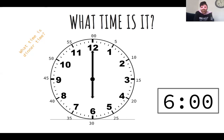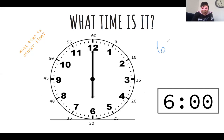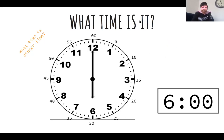Six and then dot dot zero zero — like this. Miss Bloom can write on here, so it would say 6:00 o'clock. Six o'clock. If you wrote it like that, you did a good job. Let me clear this and let's move on to our next one.